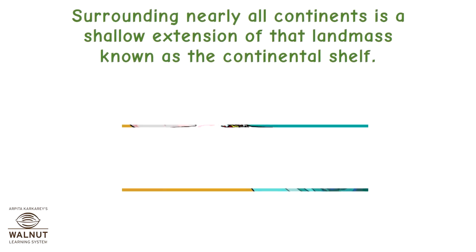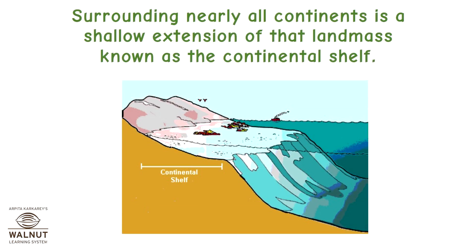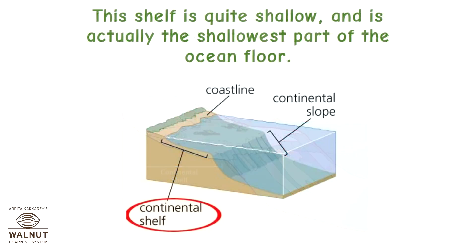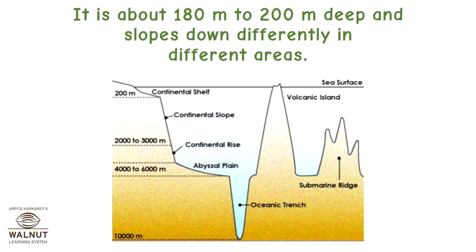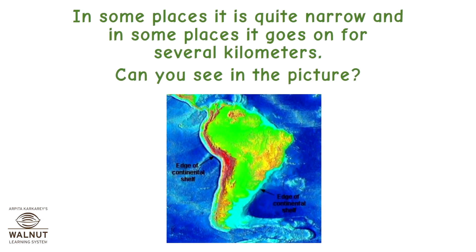Surrounding nearly all continents is a shallow extension of that landmass known as the Continental Shelf. This shelf is quite shallow and is actually the shallowest part of the ocean floor. It is about 180 meters to 200 meters deep and slopes down differently in different areas. In some places, it is quite narrow and in some places, it goes on for several kilometers. Can you see it in the picture?